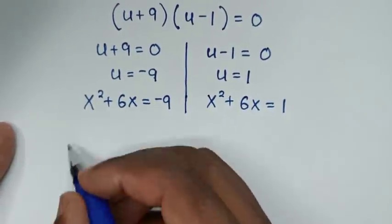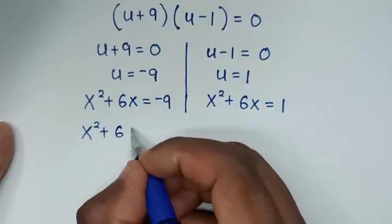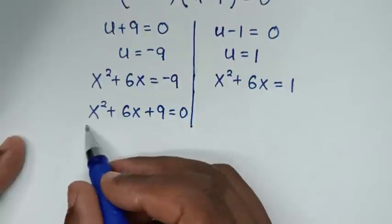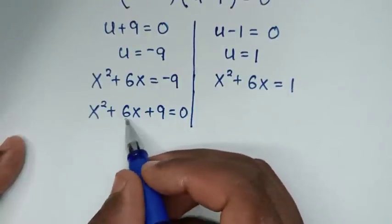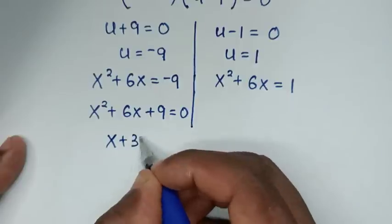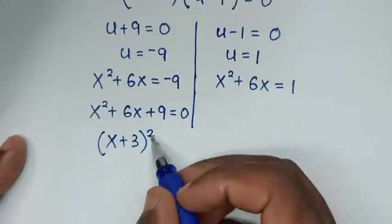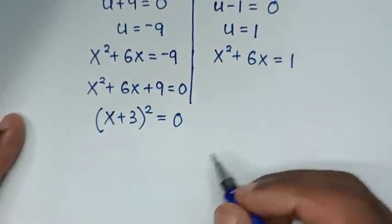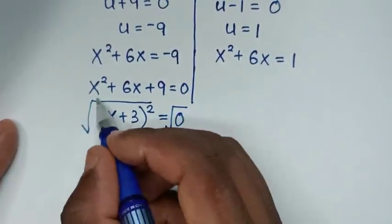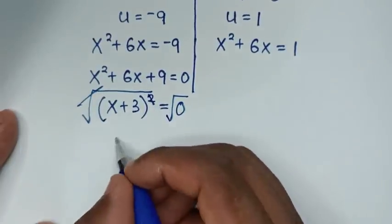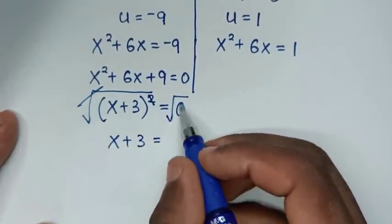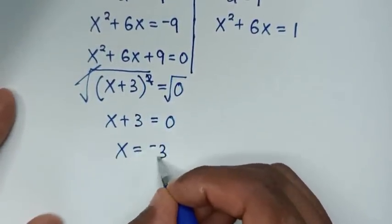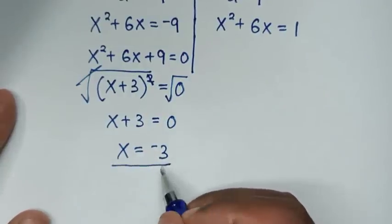For the first case, taking −9 to the left: x²+6x+9 = 0. This factors as (x+3)² = 0. Applying the square root to both sides: x+3 = 0, so x = −3. This is the first value of x — a real solution.